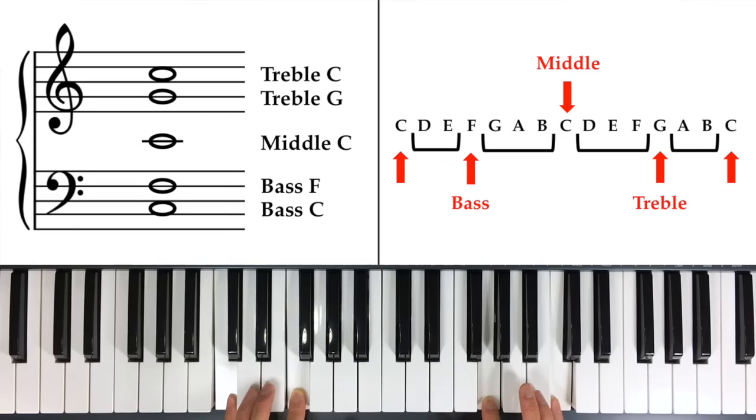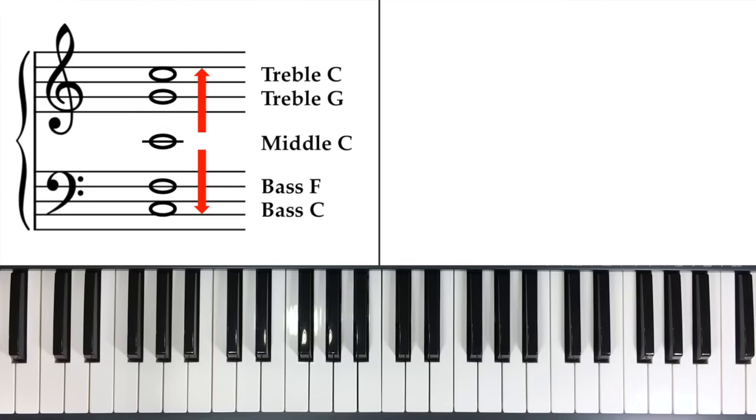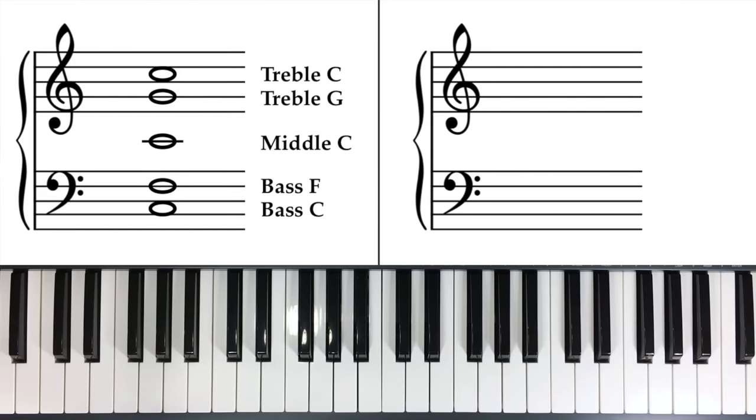And notice that they look visually very similar too. So again with the treble from the bottom up, it's the third space. And in the bass clef from the top down, it's the third space. And again, we can just figure out notes around it.